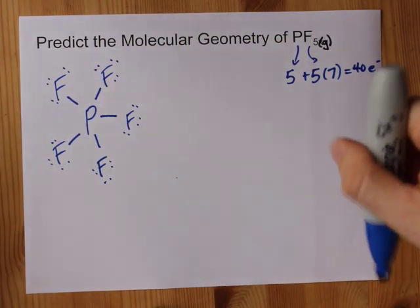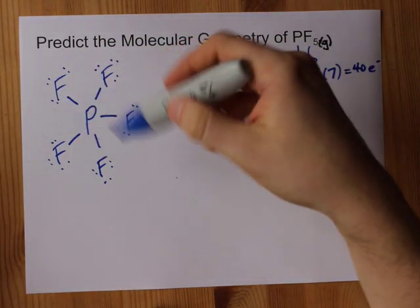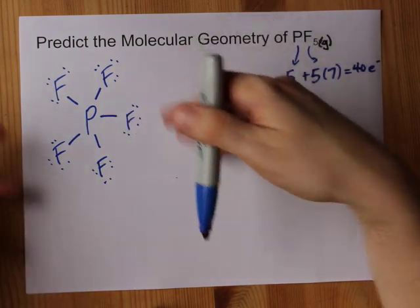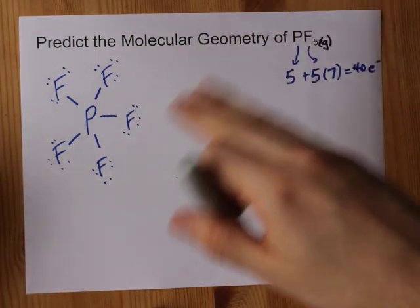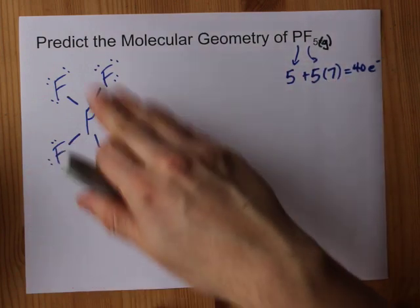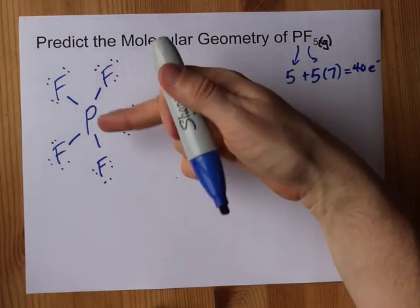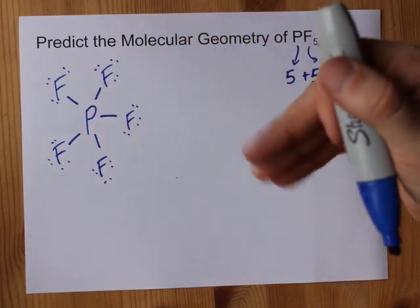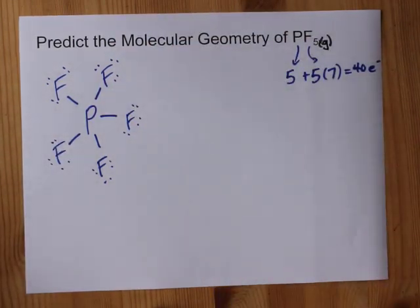Oh, well that was easy. I got to 40, and it completed the octet on each of the outer atoms exactly. If I had extra electrons left over, like if this was 42 and I only had room for 40 on the fluorines, I'd dump them on the center atom. But I don't, so I won't.